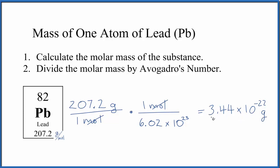If you wanted kilograms, you could divide this number by 1000 and get 3.44 times 10 to the negative 25th kilograms.